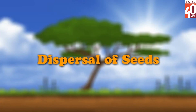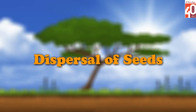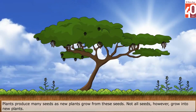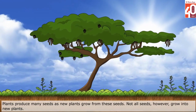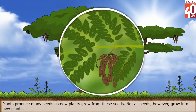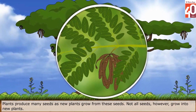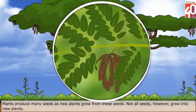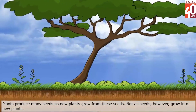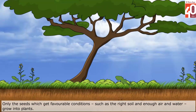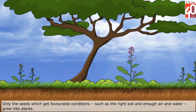Dispersal of seeds. Plants produce many seeds as new plants grow from these seeds. Not all seeds, however, grow into new plants. Only the seeds which get favorable conditions such as the right soil and enough air and water grow into plants.